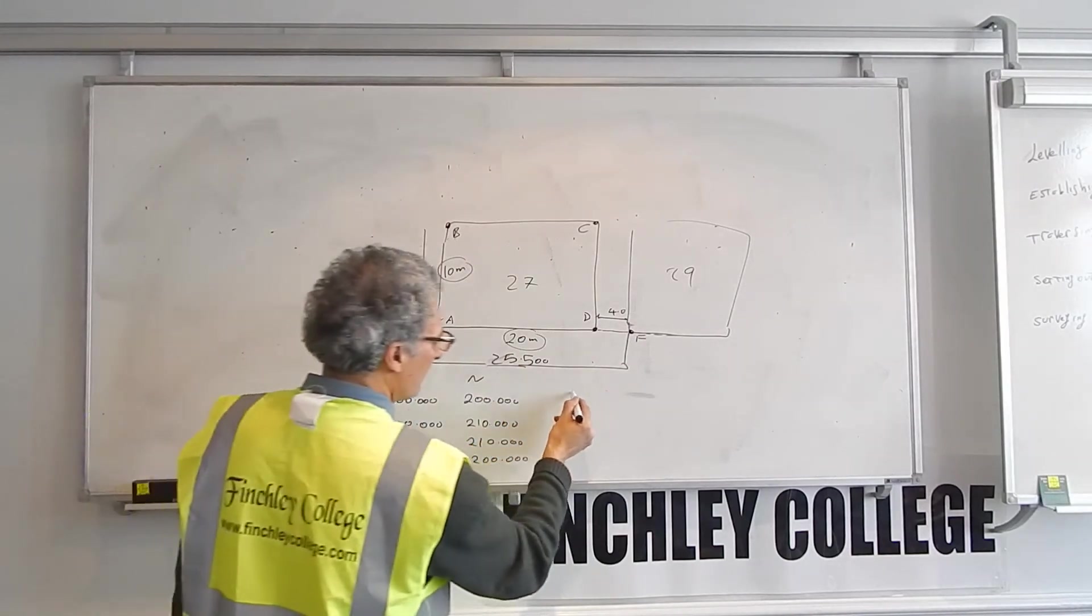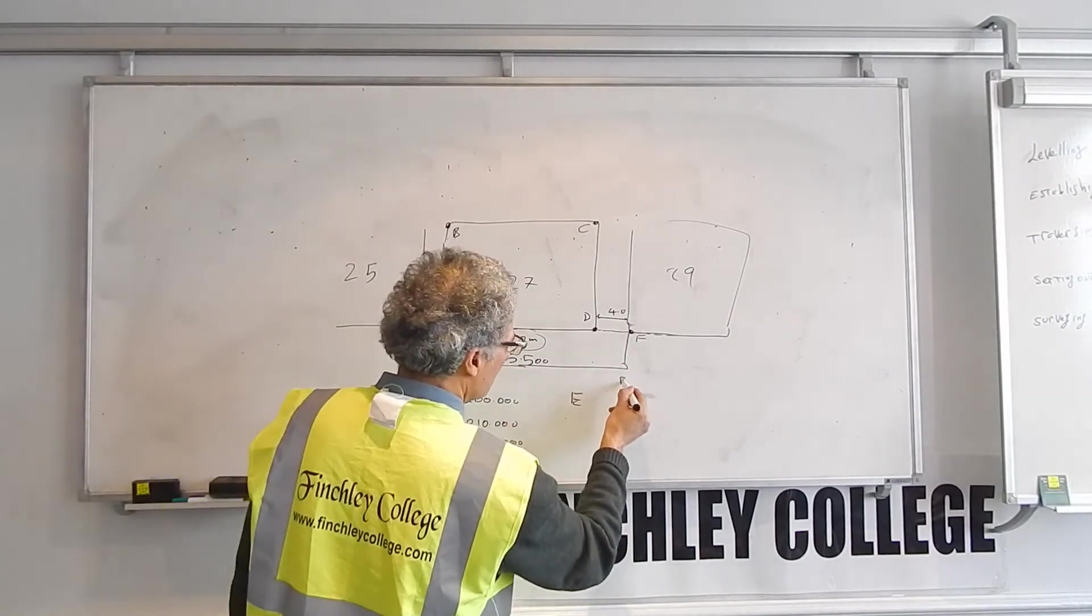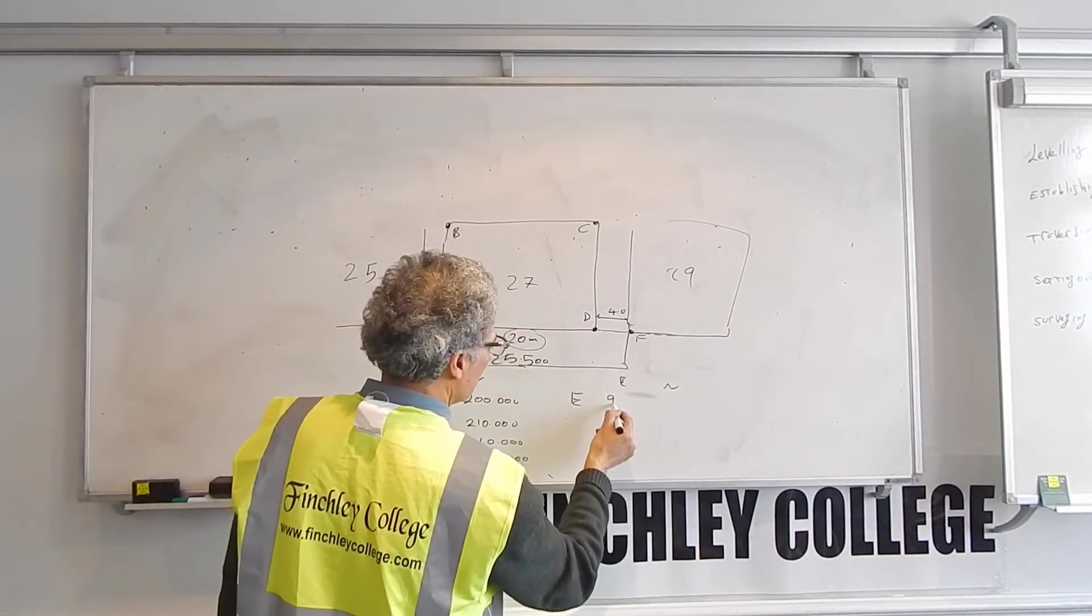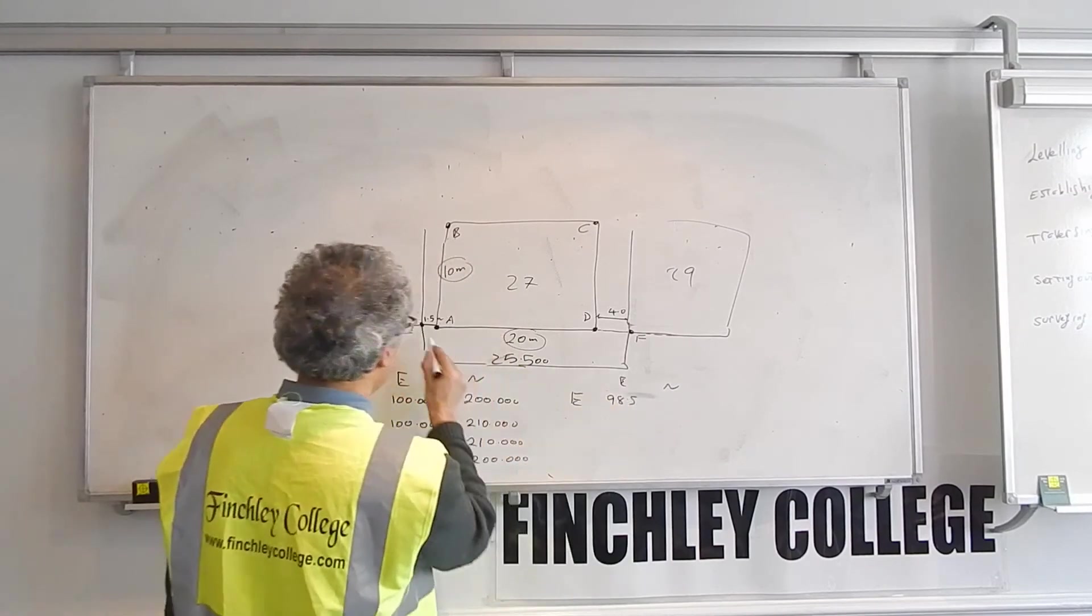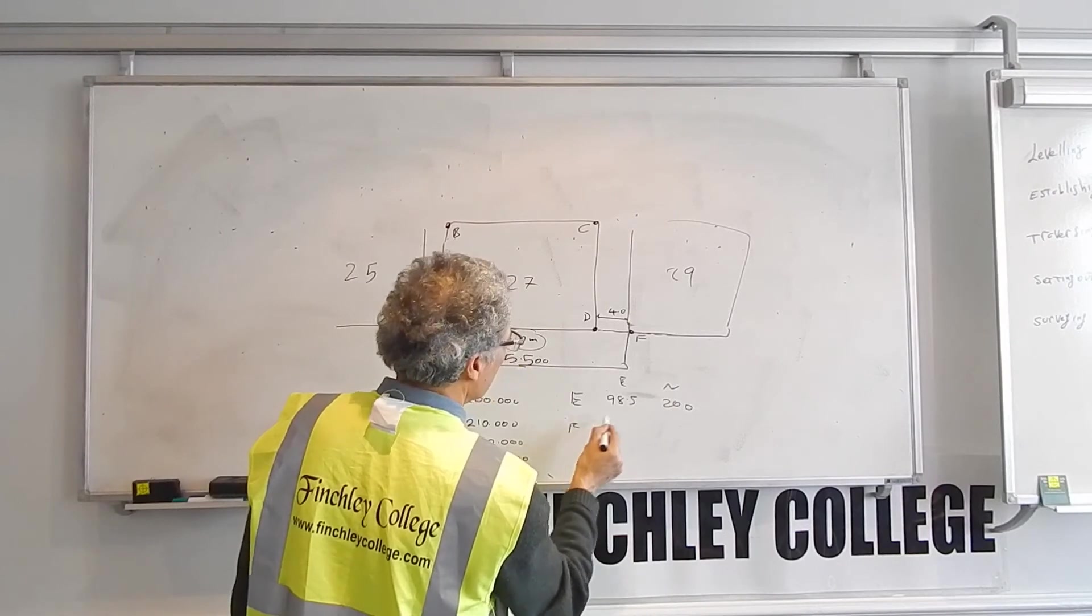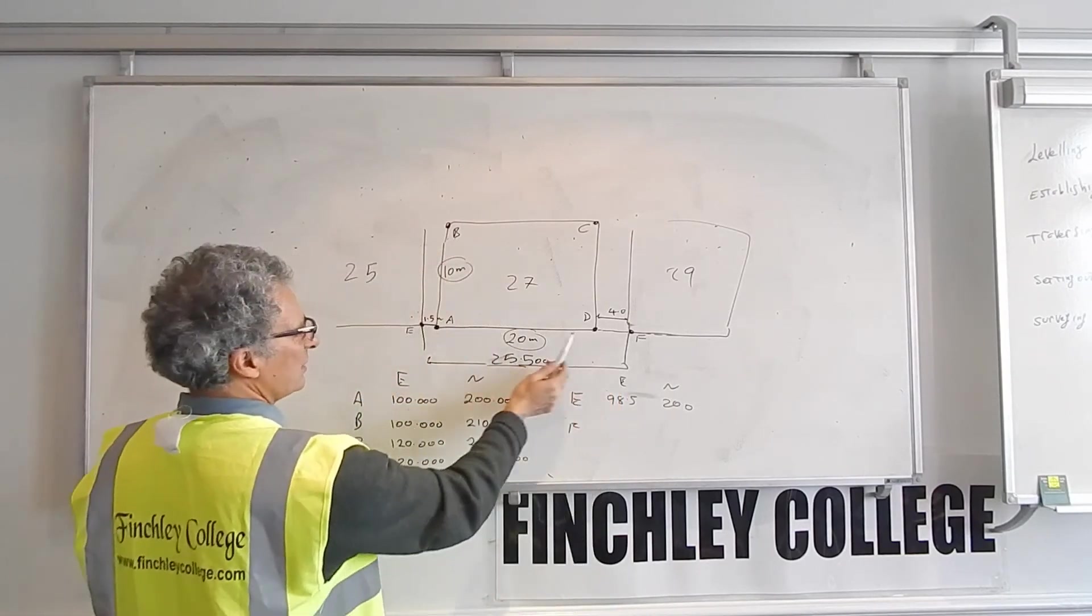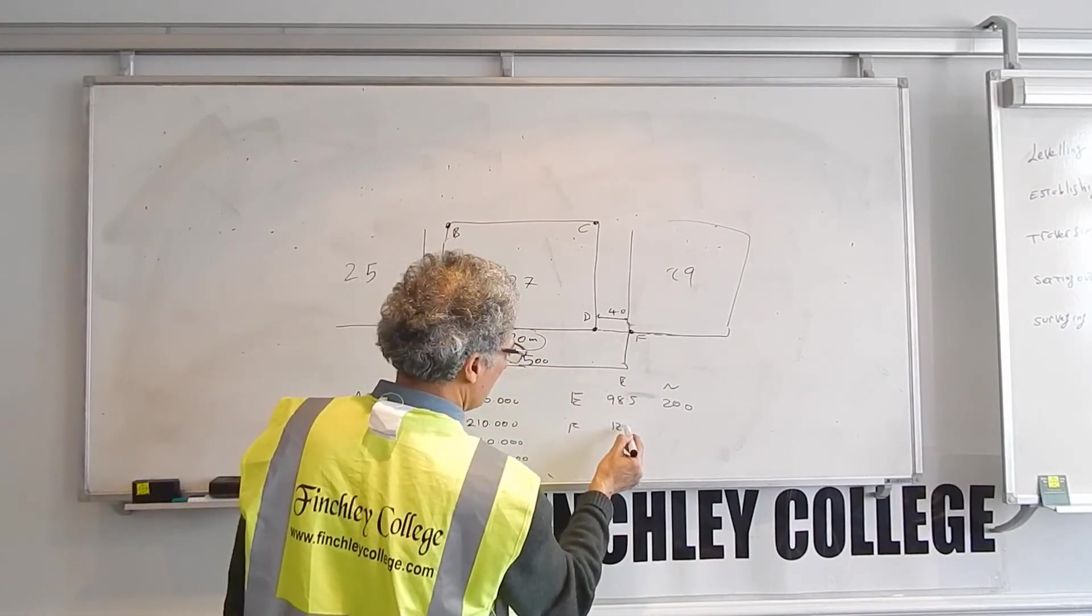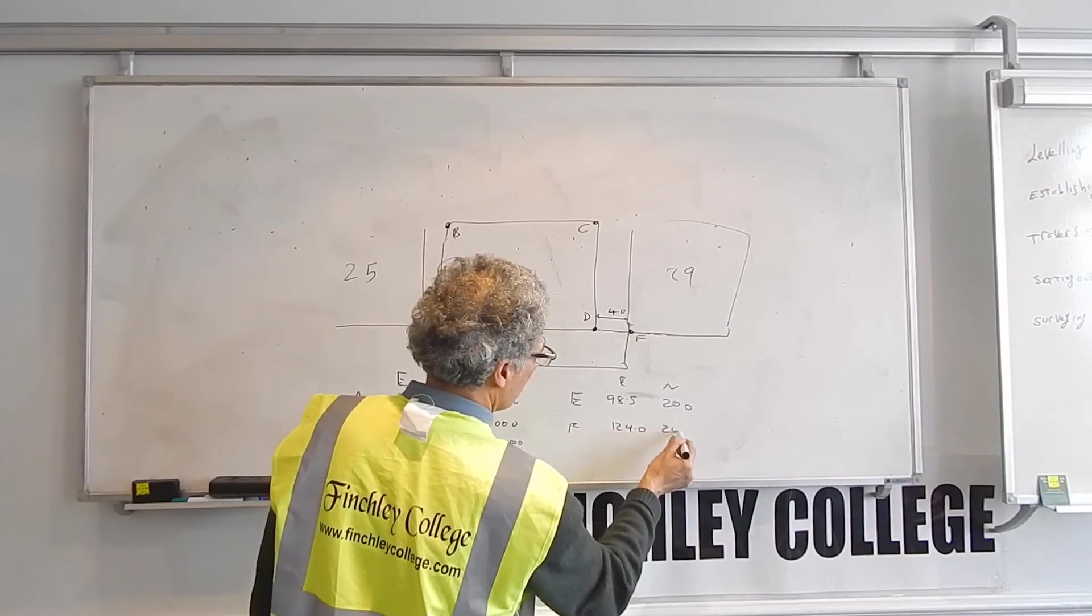E will have easting of 98.5 and the northing of 200. And F will be 124 and northing of 200.